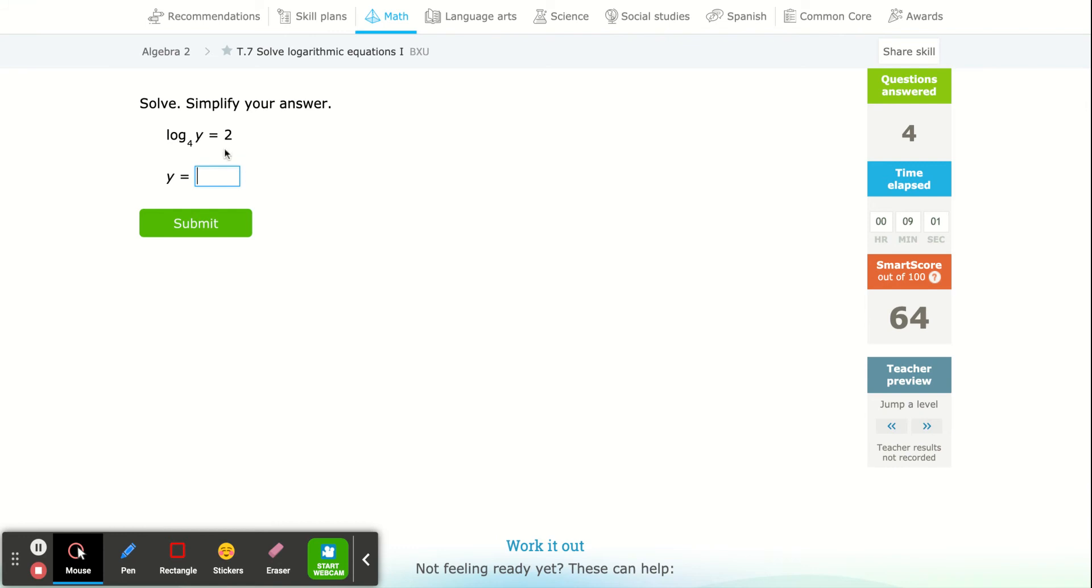This one is easy: 4 squared is 16. Some of these will go very quickly.